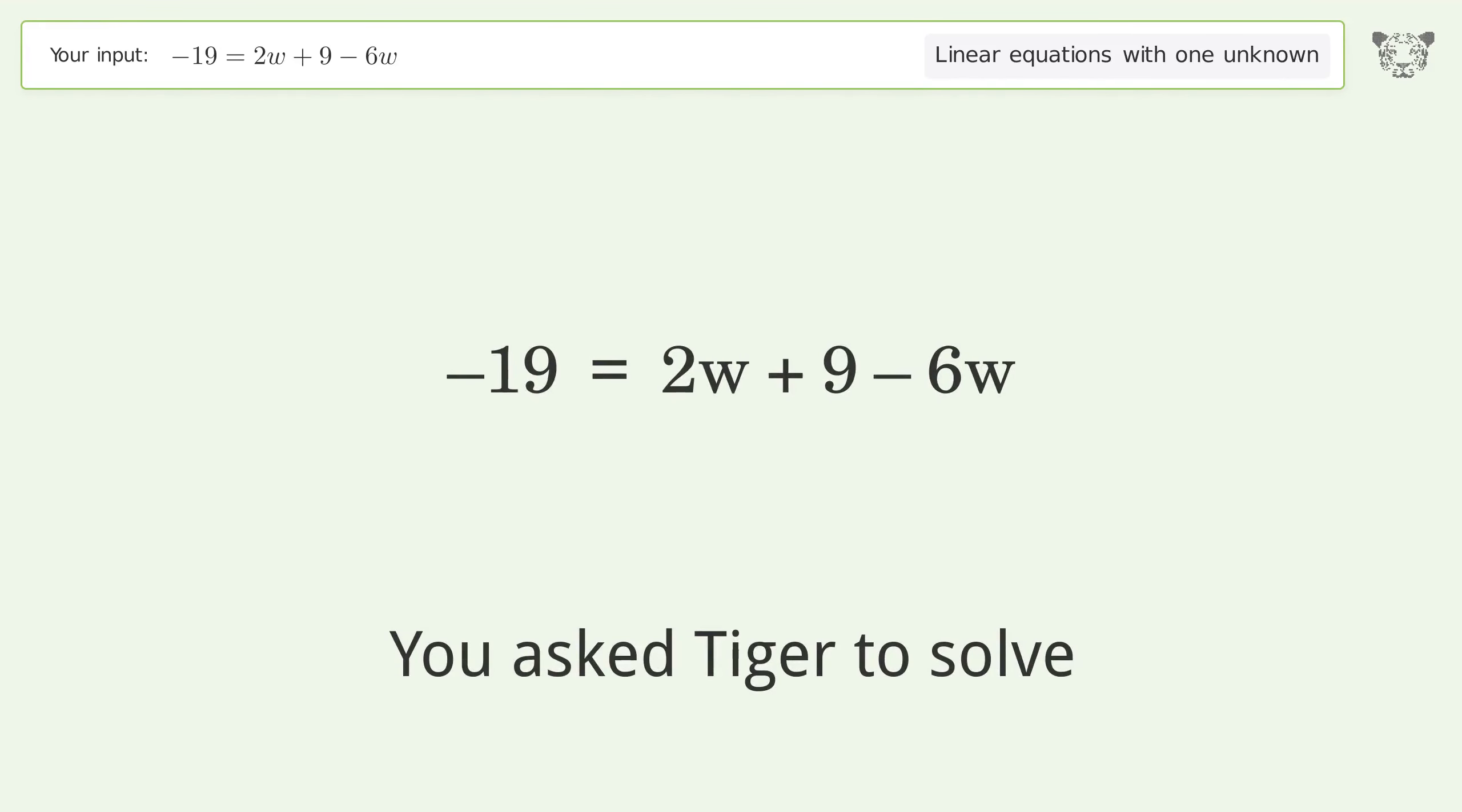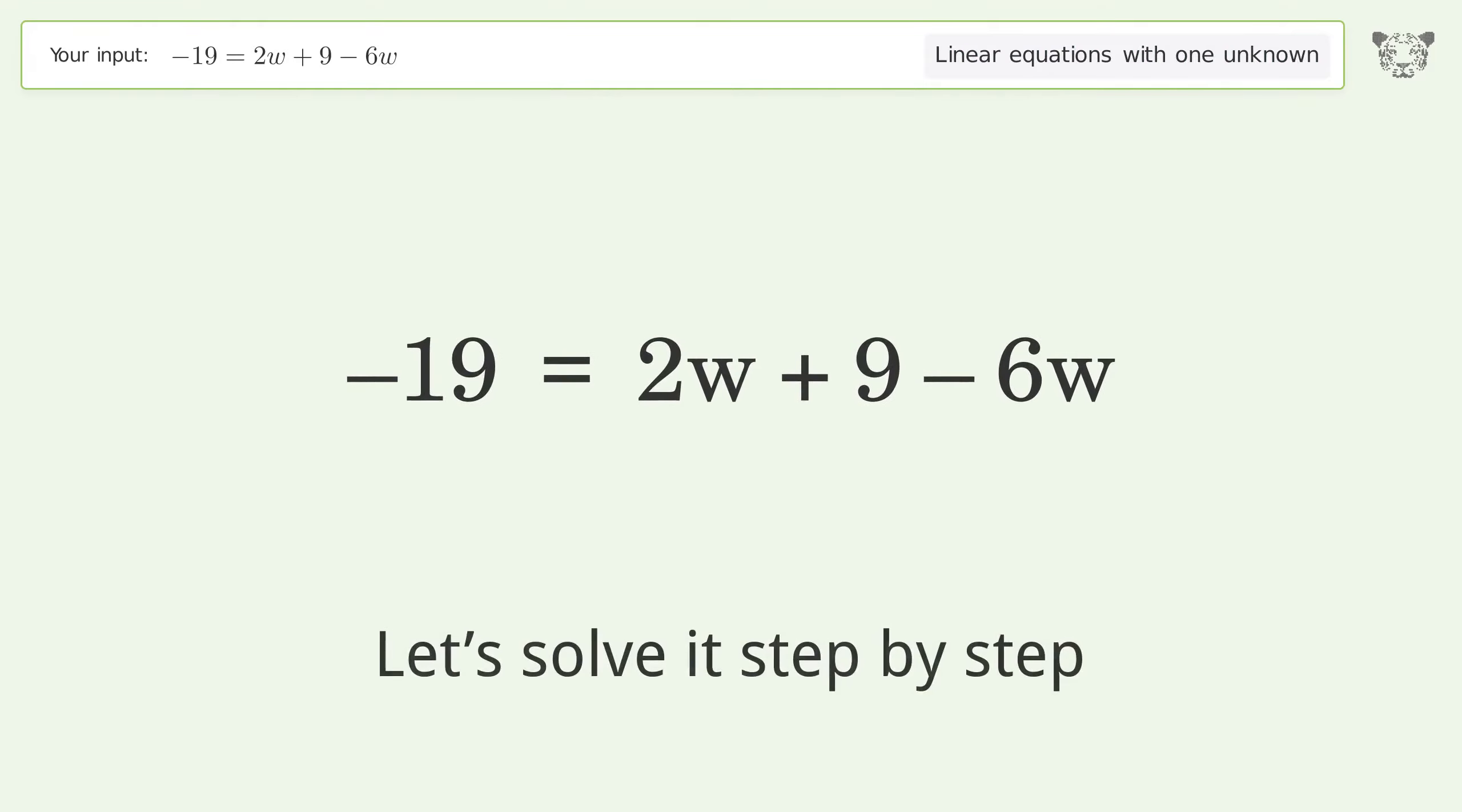You ask Tiger to solve this. This deals with linear equations with one unknown. The final result is w equals seven. Let's solve it step by step. Simplify the expression, group like terms.